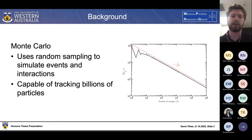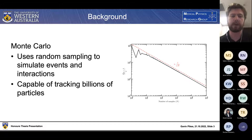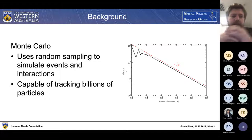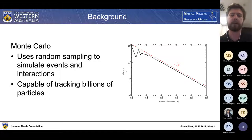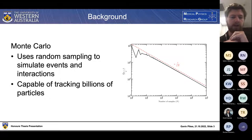The error for Monte Carlo simulations is proportional to one over the square root of N, where N is the number of histories run. To decrease the error by a factor of 10, you need to run 100 times more particles, so the computational power required becomes quite intensive. It's really only been in the last couple of decades that Monte Carlo simulations have been particularly relevant in research, as computational power has caught up to the point where you can produce usable data with low enough uncertainties.